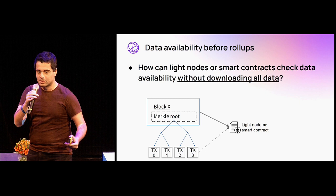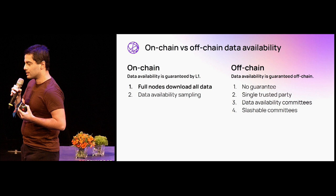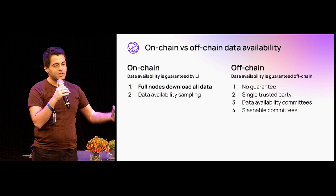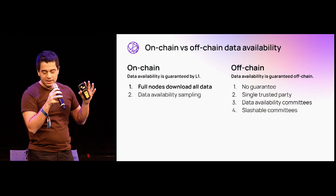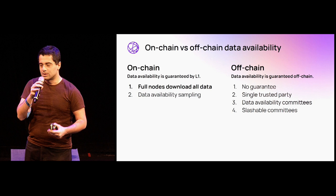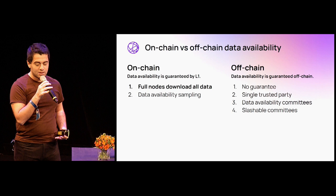There are two buckets of data availability mechanisms: on-chain data availability and off-chain data availability. On-chain data availability is when data availability is guaranteed by the layer one network — if data is unavailable, the fork choice rule of that layer one network just rejects the block outright. Off-chain data availability is the opposite: data availability is guaranteed by some third-party chain or service not directly part of the layer one consensus mechanism.